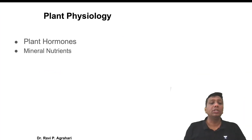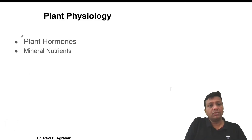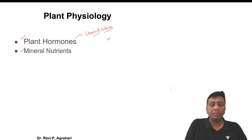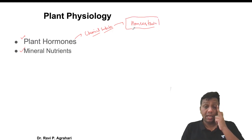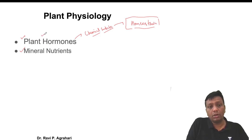Now coming to plant physiology - the last part. Here I will cover two important topics: one is plant hormones and the second is mineral nutrients. Hormones are chemical substances - they may be organic compounds or similar - and they are responsible for the homeostasis of the plant body. Homeostasis means the automatic internal body control mechanism.